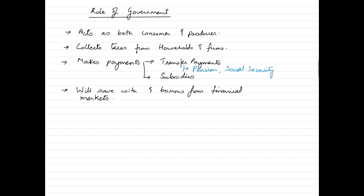The circular flow of income in a three-sector model is a simplified economic model that shows how money flows between households, businesses, and the government. In the two-sector model, households are the consumers of goods and services produced by businesses, and they also supply labor and other resources to businesses in exchange for income. Businesses are producers of goods and services, using resources purchased from households to produce and sell to households and other businesses.